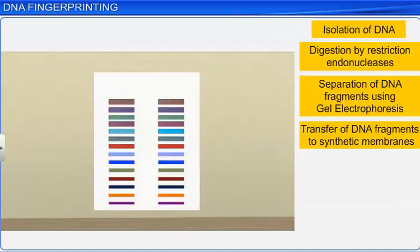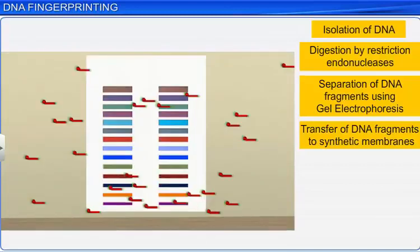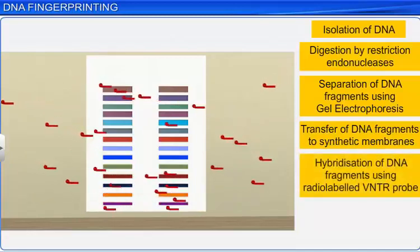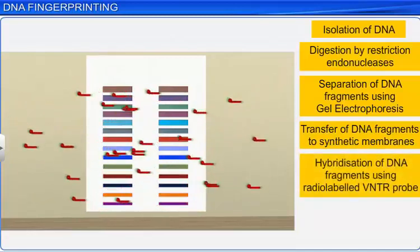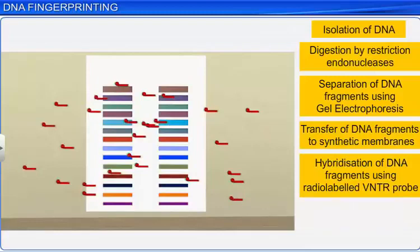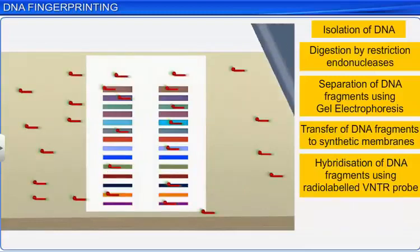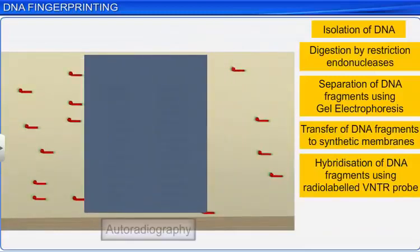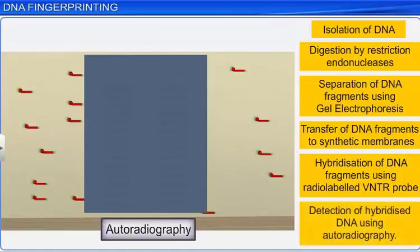This step is followed by the hybridization of the DNA fragments using a radio labeled VNTR probe. Finally, the hybridized DNA fragments are detected by a technique called autoradiography, conducted using an X-ray film.